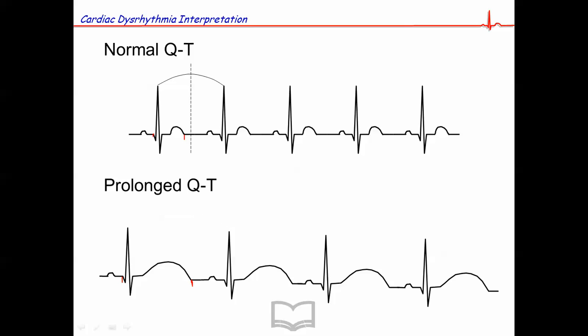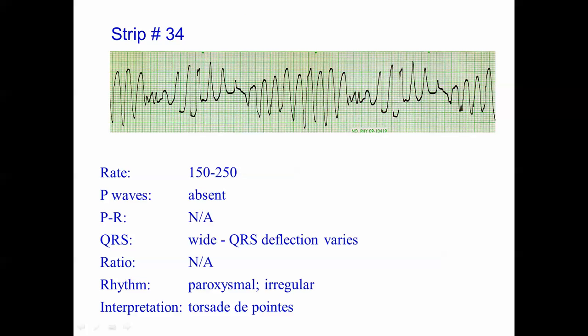Again, this is a polymorphic ventricular tachycardia in which the heart rate is typically between 150 and 250. There are gradual changes in the QRS amplitude and twisting of the QRS. It may be upgoing, then downgoing.